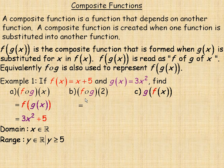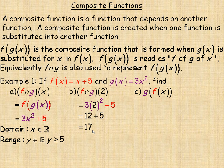In example b, to evaluate f of g of 2, we use the composite function and substitute 2 in place of x. Two squared is 4, times 3 is 12, and adding 5 gives f of g of 2 equals 17. Equivalently, we could evaluate g of 2 first — two squared times 3 equals 12 — and then substitute that 12 into f: 12 plus 5 is 17.